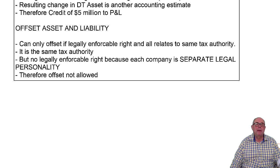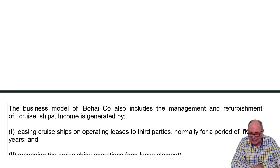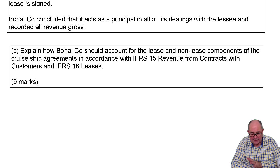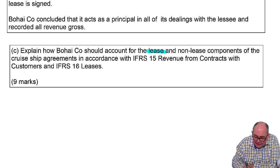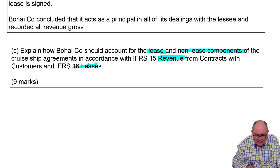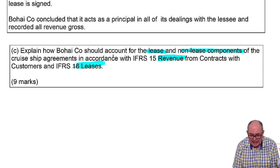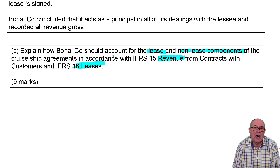The liability will be on the credit side of the balance sheet and the asset on the debit side. They need to show the liability and the asset separately. Now let's move on to requirement C — how do we account for the lease and non-lease components of the cruise ship? Thinking about revenue and thinking about leases: the lease bit will be in line with IFRS 16, and the other services we provide will be more about IFRS 15.